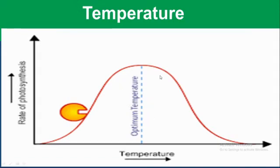Temperature affects both the light-dependent and the light-independent stages of photosynthesis, because enzymes involved in both stages are sensitive to temperature changes.